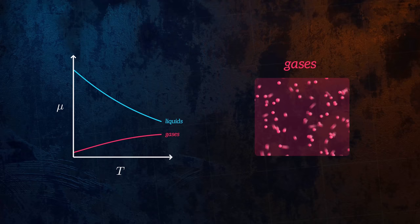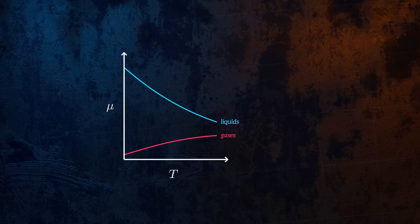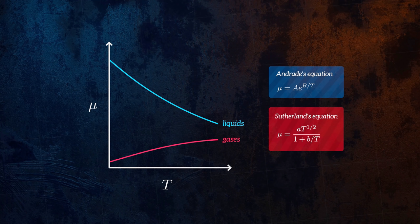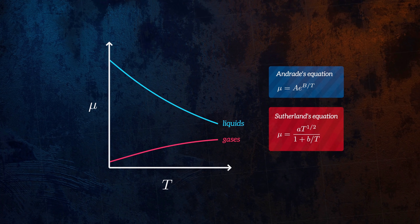The temperature dependence of viscosity can be modeled using simple empirical correlations. We can use Andrade's equation for liquids and Sutherland's equation for gases, where the various constants are determined for each fluid by experimentation.